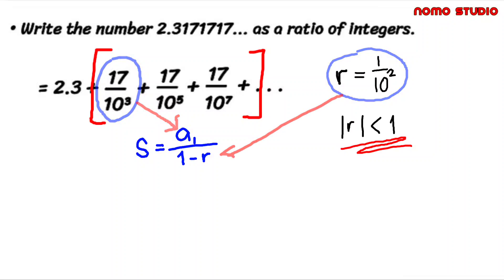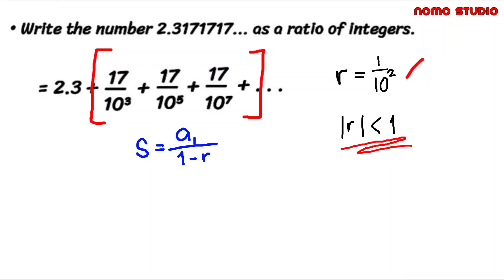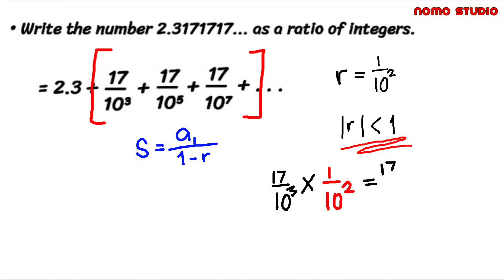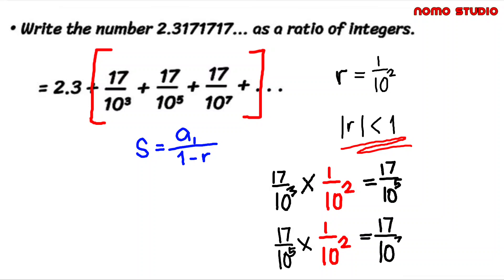R stands for the common ratio, meaning we generate the next term by multiplying the common ratio to the previous term. In this case, if we multiply 1 over 10 squared by the first term in the sequence, the result is the 2nd term. And if the 2nd term is multiplied by 1 over 10 squared, the result is the 3rd term, and so on.